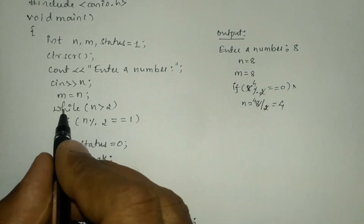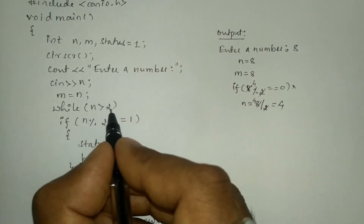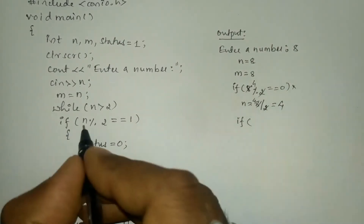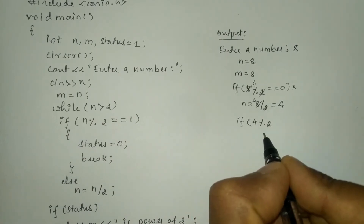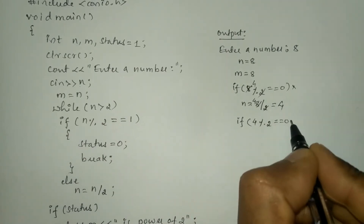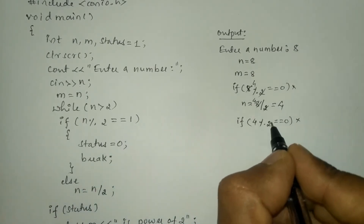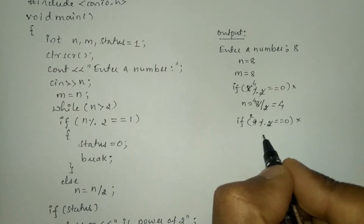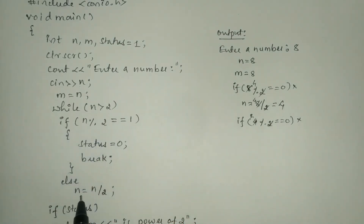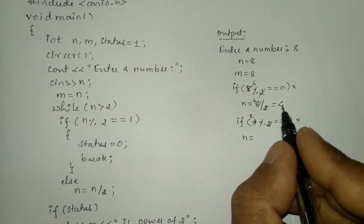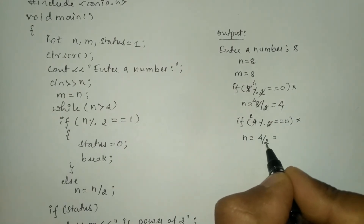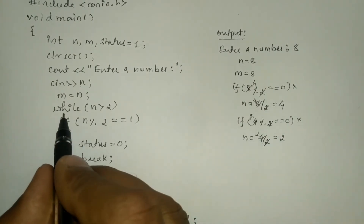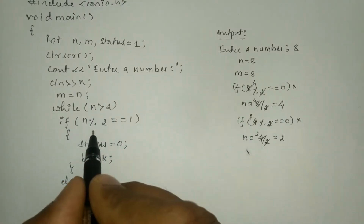Control transfers back to while. Now n is 2. Is 2 greater than 2? No, condition is false. Once this condition is false, the control immediately comes out of the while loop.